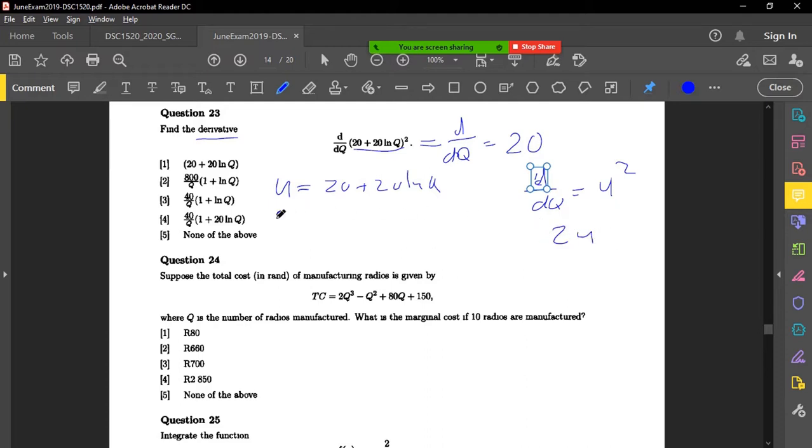And then obviously du over dq here, our dq equals derivative of this would be, what is the derivative of that? Let's see, ln x becomes 1 over x, it'll be 20 over q.